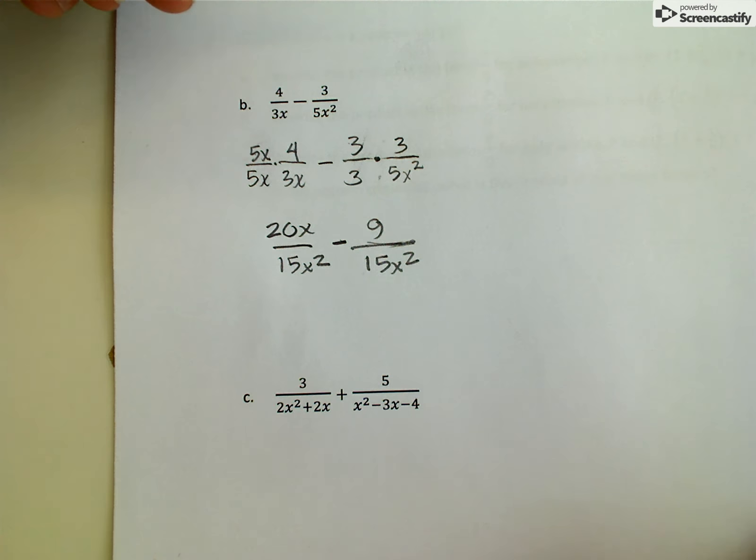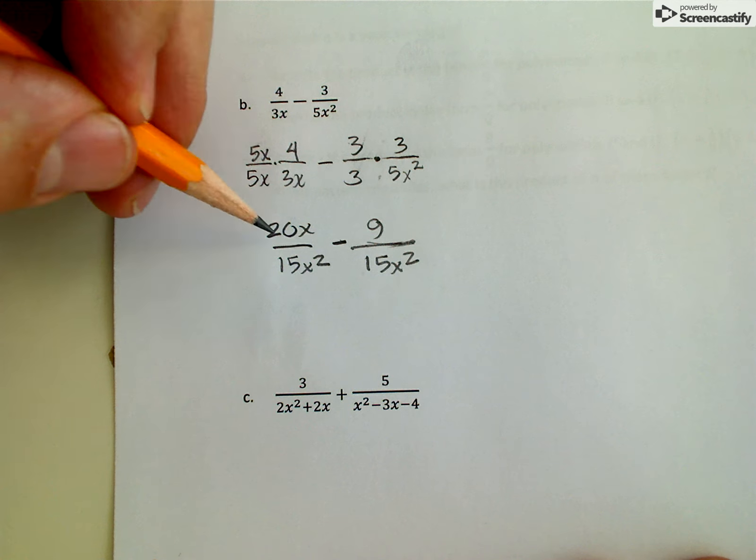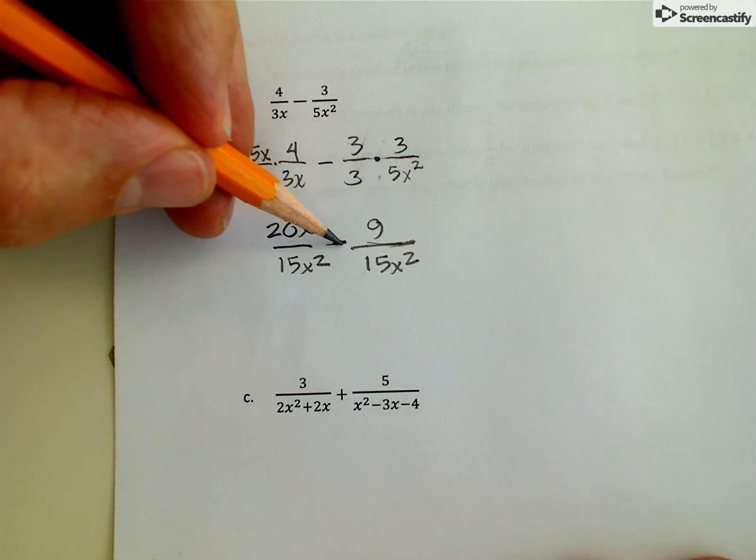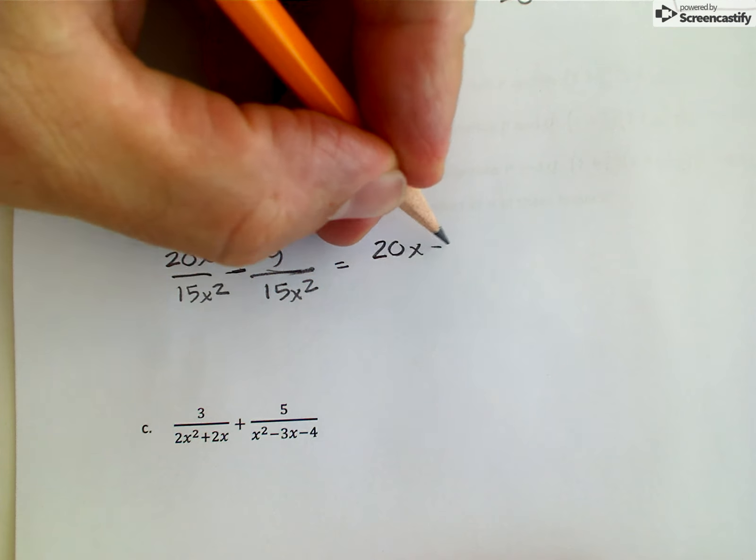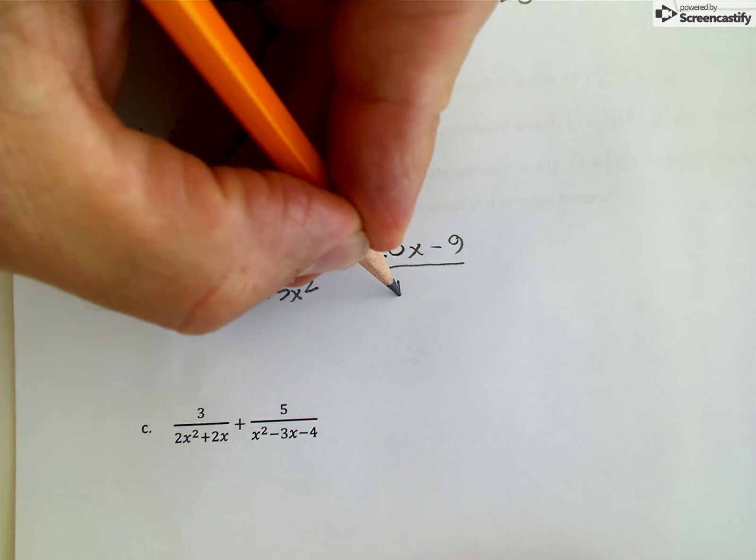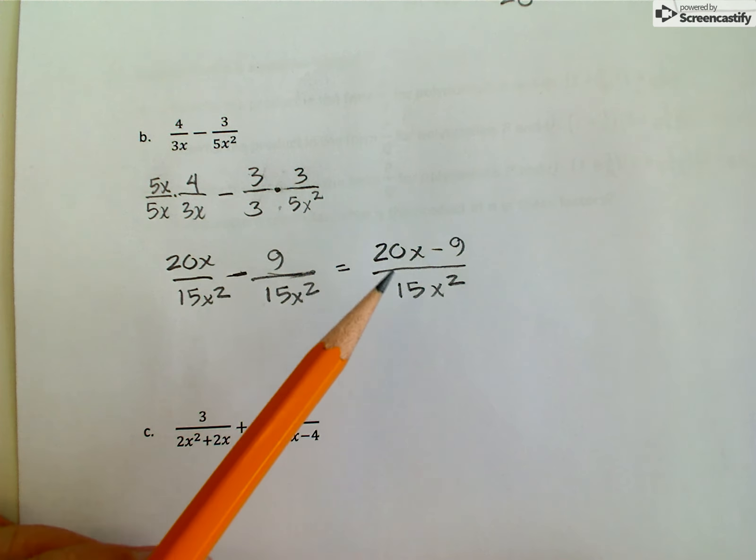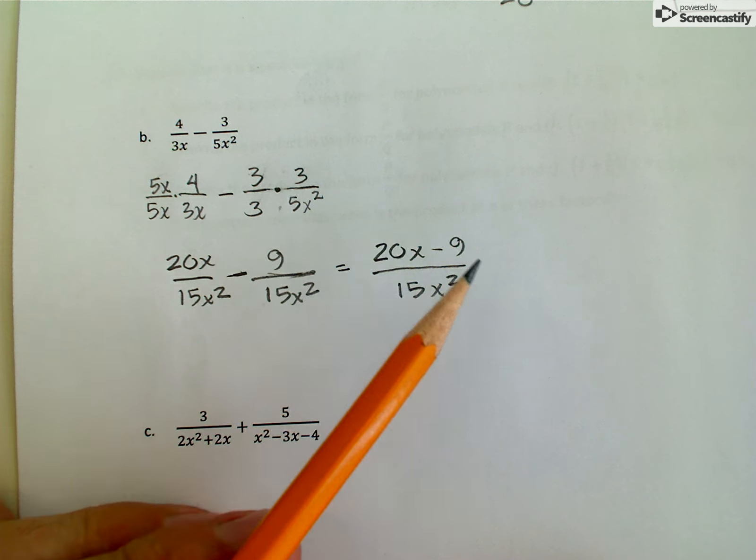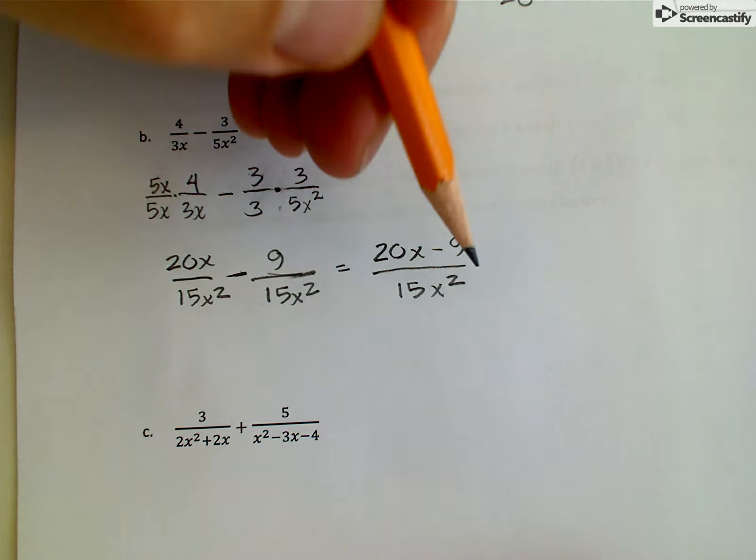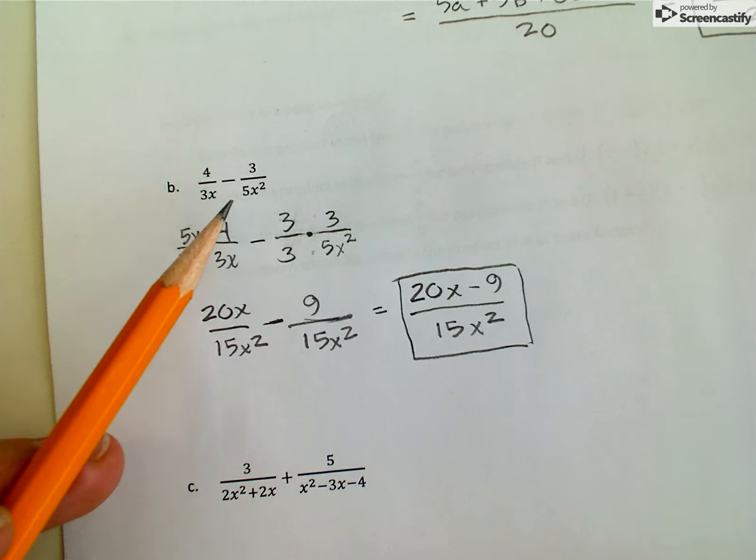So now I have a common denominator, and I can just evaluate this subtraction problem pretty easily. I end up with 20x minus 9 divided by 15x squared. And there's no common factor that I can pull out of these two terms on the top. And so this is my simplest version of this difference.